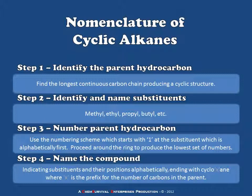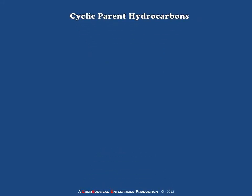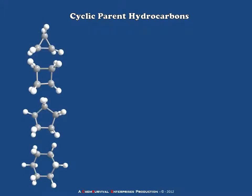Now let's take a look at a few examples so that we can see how these rules are applied. First, let's identify some simple cyclic structures which do not contain any substituents at all.